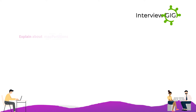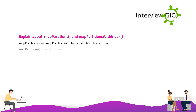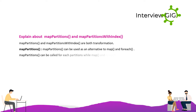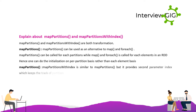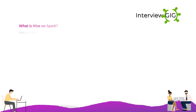Explain mapPartitions and mapPartitionsWithIndex. Both are transformations. mapPartitions can be used as an alternative to map and foreach — it is called for each partition while map and foreach are called for each element in an RDD. Hence, one can do initialization on a per-partition basis rather than per-element. mapPartitionsWithIndex is similar to mapPartitions but provides a second parameter, index, which keeps track of the partition.